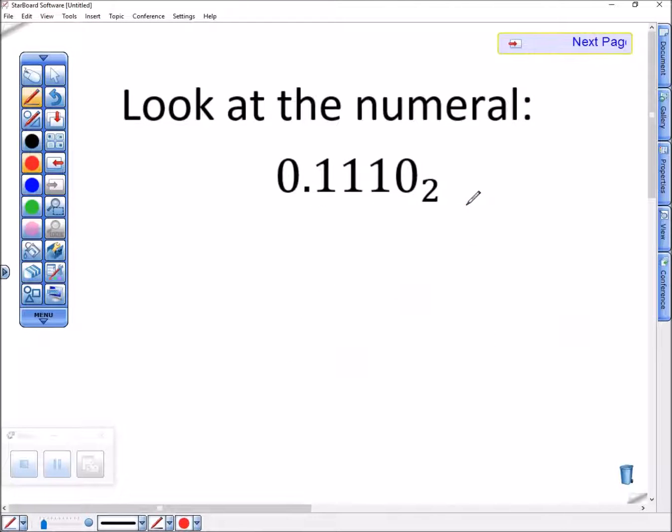Let's do one more quick. Here I have point one, one, one, zero base two. Again, I just want to look here. One, one, one, zero. That's no ones, but a two, a four, and an eight. So this is fourteen.